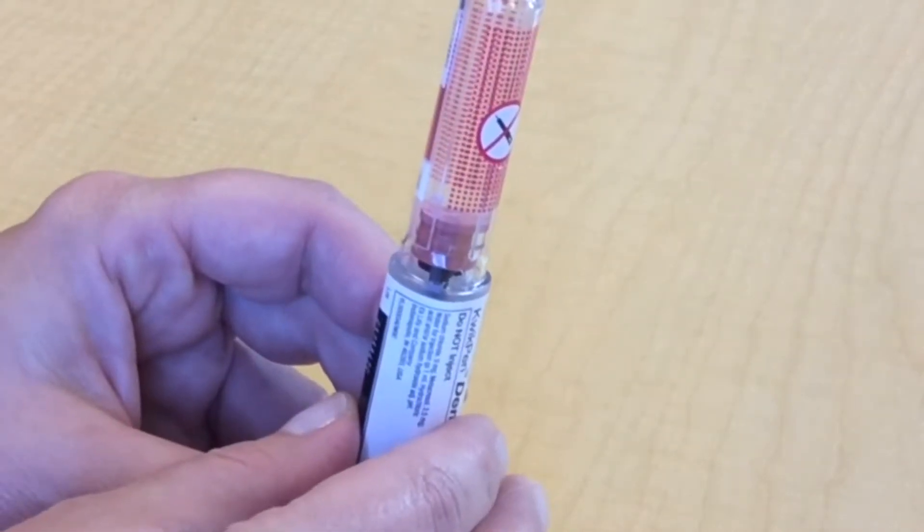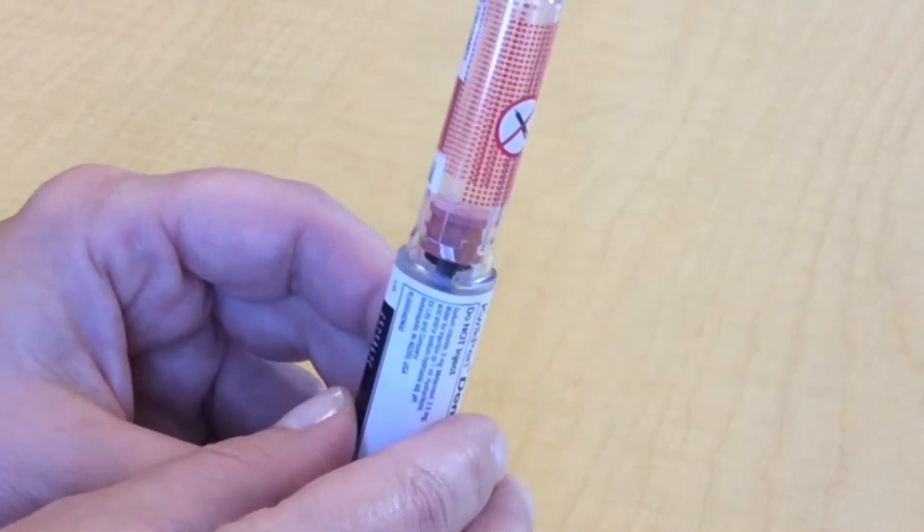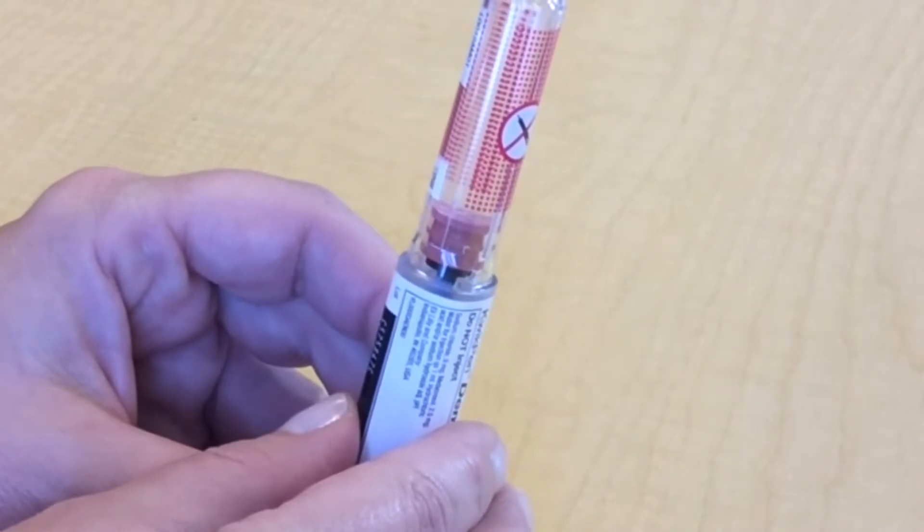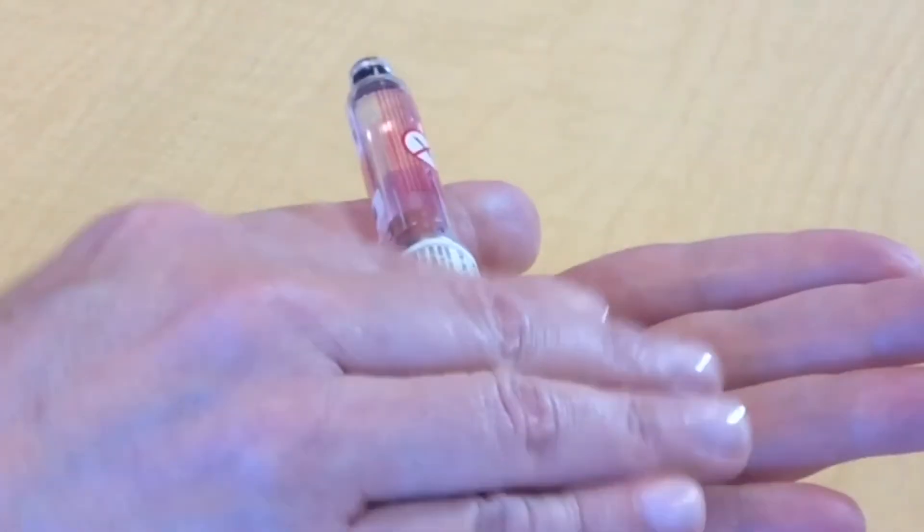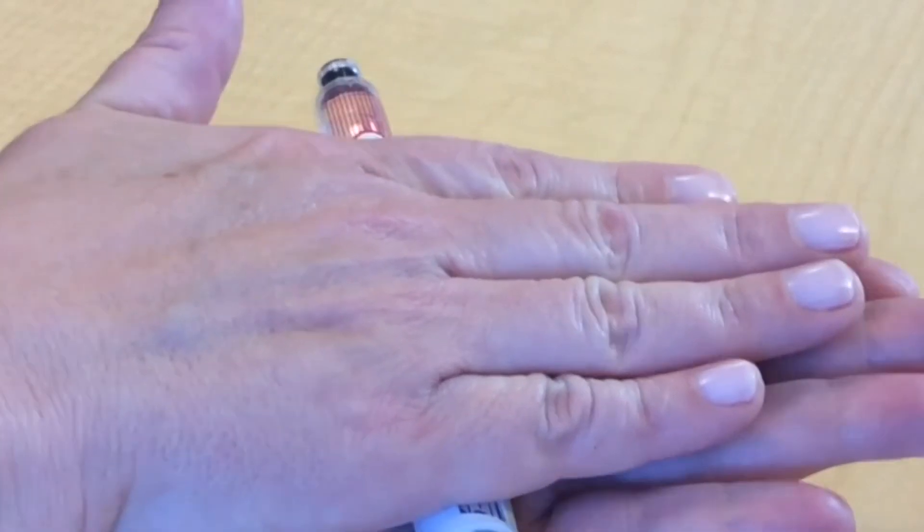If your insulin is cloudy, this means it will need to be mixed before you use it. To mix your insulin, place the pen between your palms and roll it 10 times.